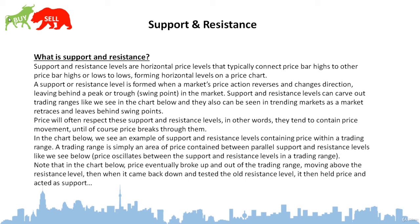In the chart below we see an example of support and resistance levels containing price within a trading range. A trading range is simply an area of price contained between parallel support and resistance levels. Price oscillates between the support and resistance levels. Note that price eventually broke up and out of the trading range, moving above the resistance level. Then when it came back down and tested the old resistance level, it acted as a support.